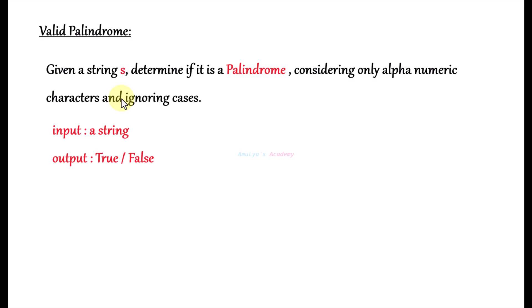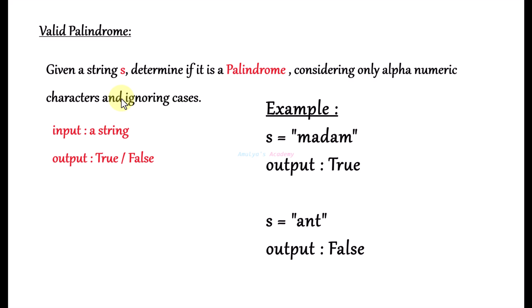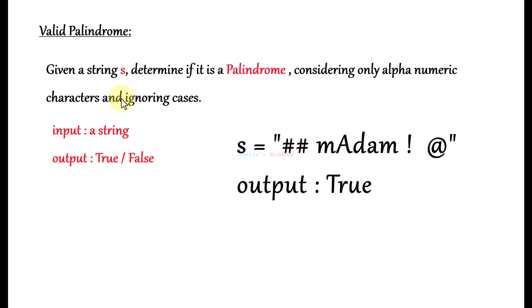Let's analyze the problem. The input of our program is a string and the output is true or false — true if the string is a palindrome, false otherwise. A palindrome string reads the same backward as forward. For example, ignoring non-alphanumeric characters and case sensitivity, reversing the alphanumeric characters gives the same string.